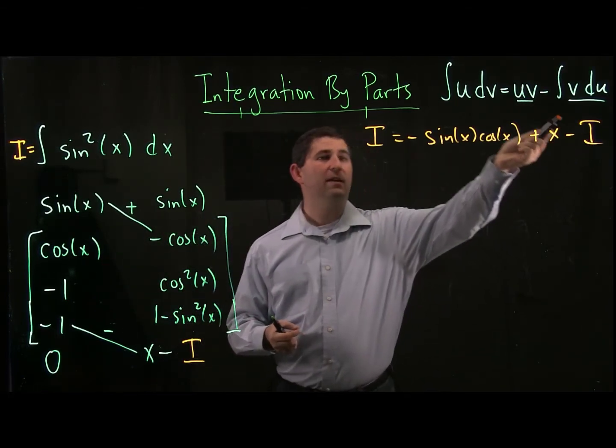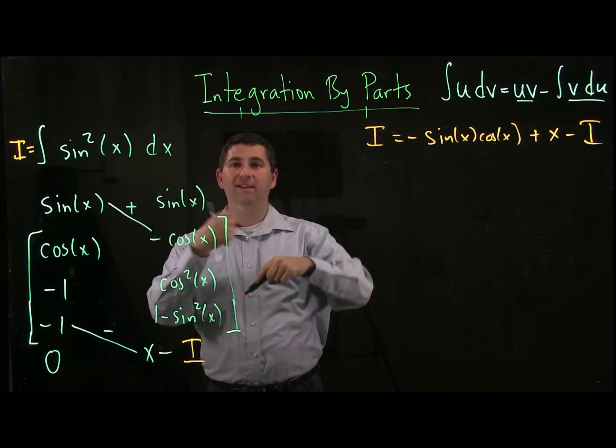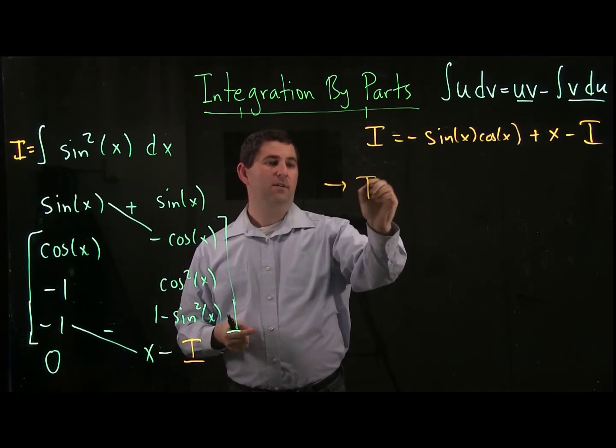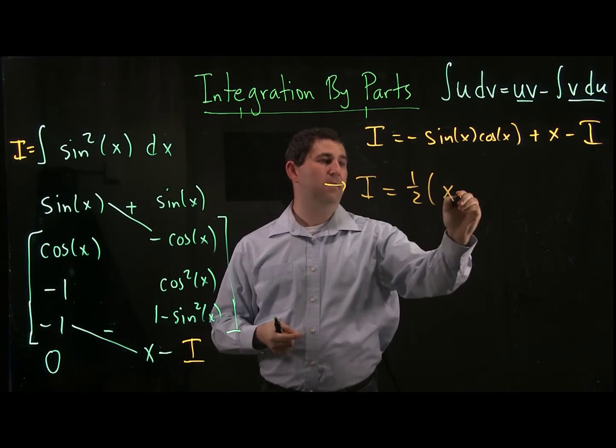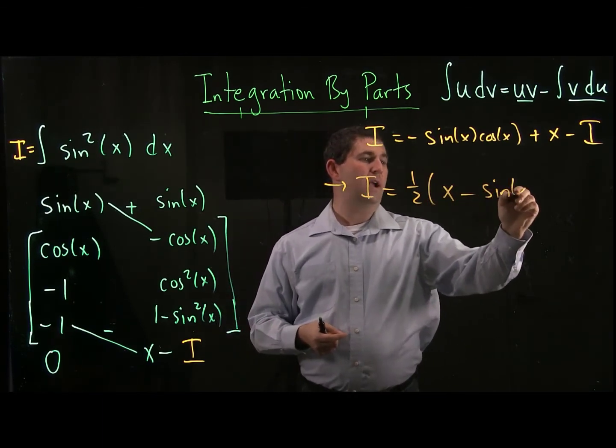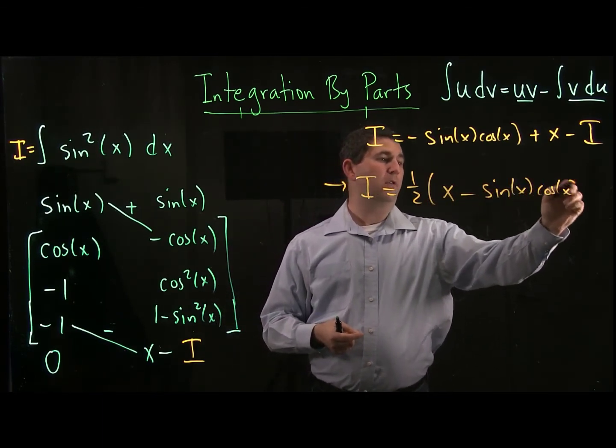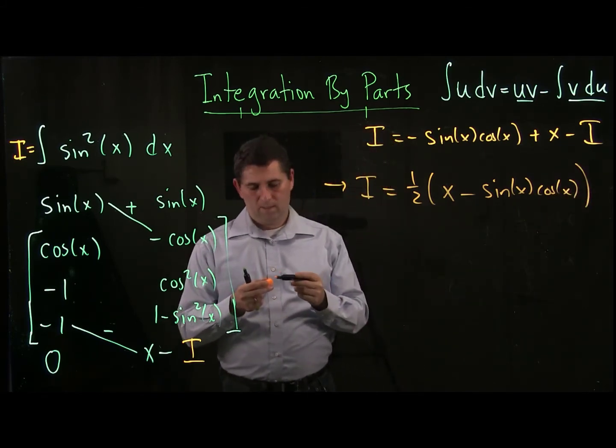And now our i trick comes to fruition. We take this negative i and make it a 2i on the left, divide by 2. So i ends up equaling 1 half, and let's rewrite it, x minus sine of x cosine of x.